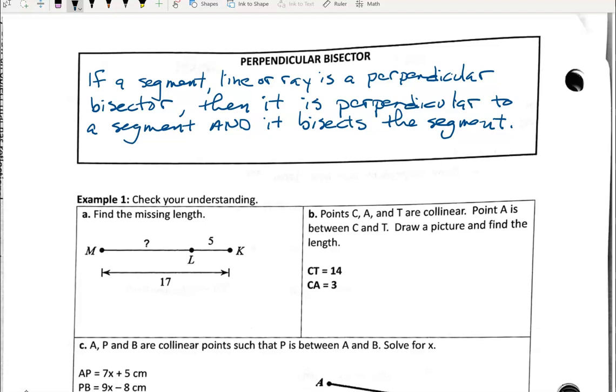Just to review, perpendicular, and our symbol for that is an upside-down T, means to intersect at a right angle. That's at 90 degrees. So if something's perpendicular to something else, they cross, they intersect at 90 degrees.